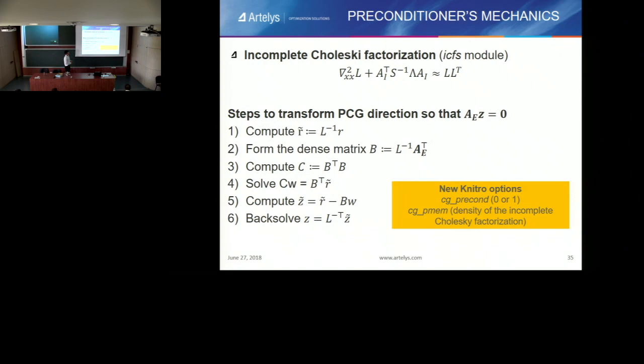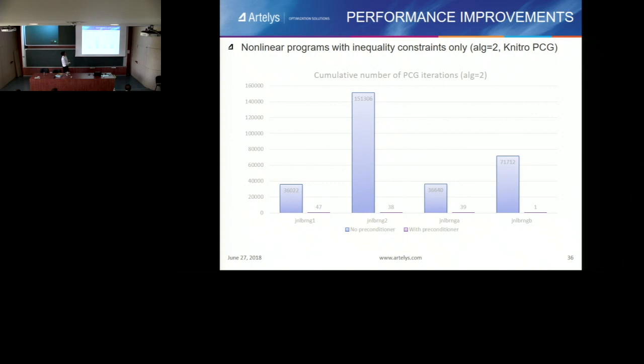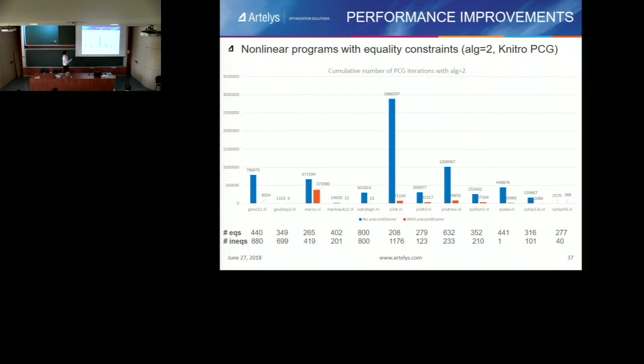On inequality-constrained problems, we really drastically improve algorithm 2. This can also apply to algorithm 1 when it falls back to CG. In terms of number of iterations on bound-constrained and equality/inequality-constrained problems, we generally get the same good behavior. However, sometimes the improvement is very large and sometimes not so much — it's problem-dependent and sometimes hard to tune.